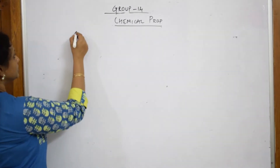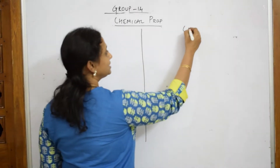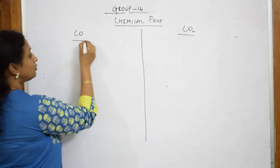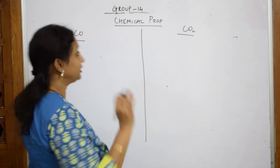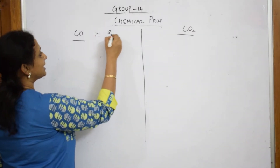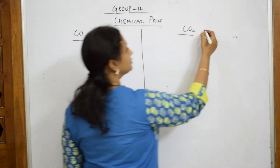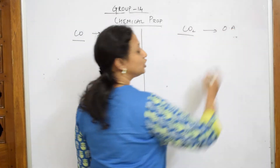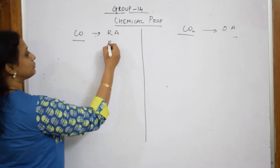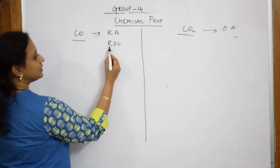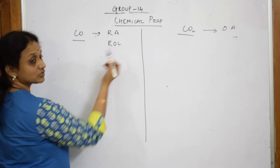Before going to the concept of carbon monoxide and carbon dioxide chemical properties, just remember: carbon monoxide is a reducing agent. Carbon monoxide acts as a reducing agent and carbon dioxide acts as an oxidizing agent. Remember the word ROL — reducing agent loses electrons and itself gets oxidized.